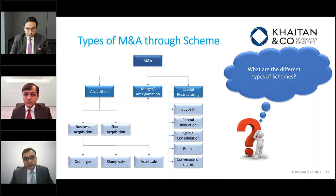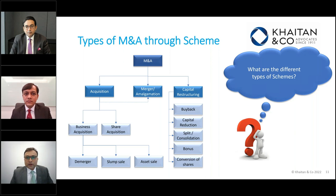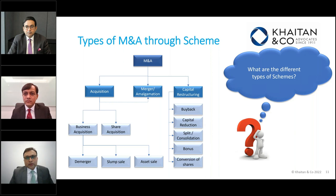The next option in capital restructuring is capital reduction. This can be done under Section 66 or Section 230 of the Companies Act. Capital reductions have been used as a mechanism for squeezing out minority shareholders remaining post-listing. In many cases, companies had issued ESOPs to employees who are no longer with the company but still hold shares as shareholders. The company may want to give liquidity to these shareholders, and schemes have become one of the most talked-about instruments for this purpose in recent times.